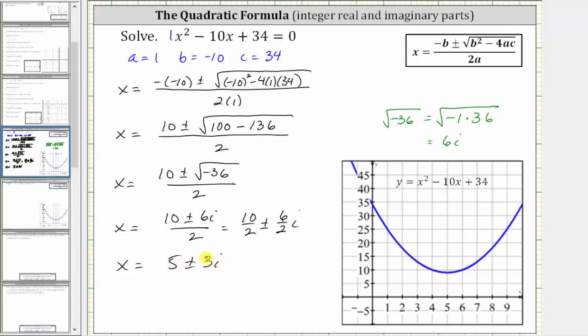So these are the two complex solutions. If we're asked to list the solutions, one solution is five plus three i, and the other is five minus three i.